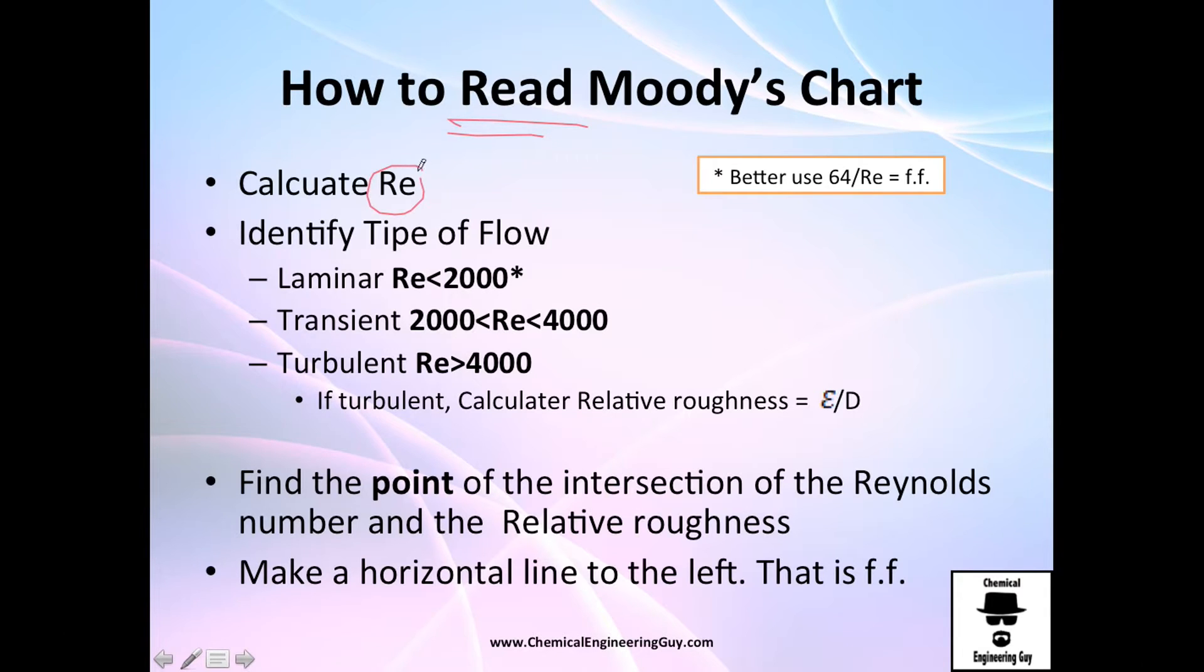We always need to calculate the Reynolds number first. Identify the type of flow, so recall before the 2000 limit it's laminar. Instead of using the Moody's diagram I would recommend you to use this formula right here. It's more exact and easier and you don't need to look in the diagram.